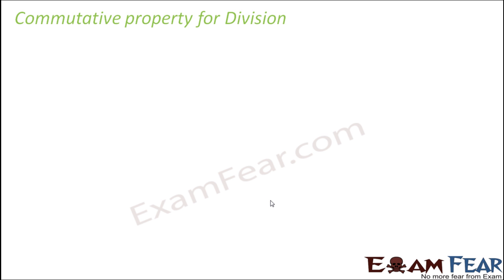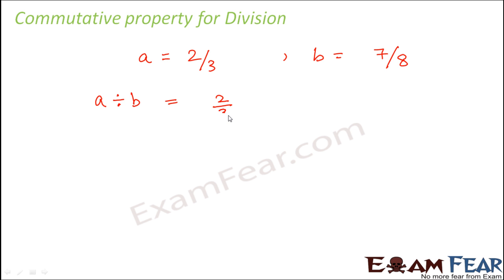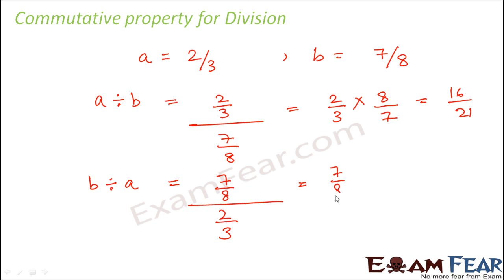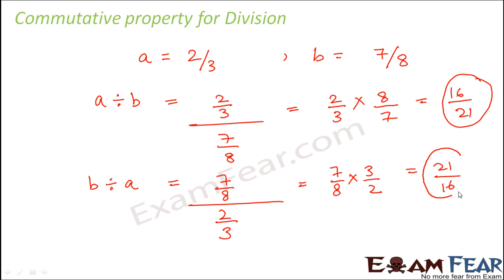Now let's talk about division, which is again not going to hold true. Let a equal 2/3 and b equal 7/8. Calculating a divided by b: 2/3 divided by 7/8 equals 2/3 into 8/7, which comes out to 16/21. Calculating b divided by a: 7/8 divided by 2/3 equals 7/8 into 3/2, which is 21/16. So a divided by b is 16/21 and b divided by a is 21/16 — the numerator and denominator are exchanged, giving two different values. Therefore a divided by b is not equal to b divided by a.